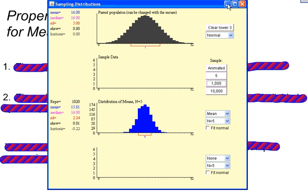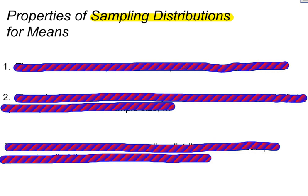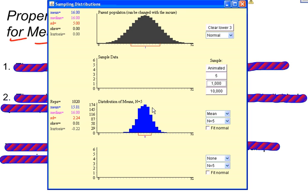This blue distribution is the distribution of the averages of my samples. In other words, it is the distribution of my sample means. This is a sampling distribution for means. I'm taking samples from a population, finding the average of each one of those samples, and putting those averages into their own distribution. That's what a sampling distribution is.